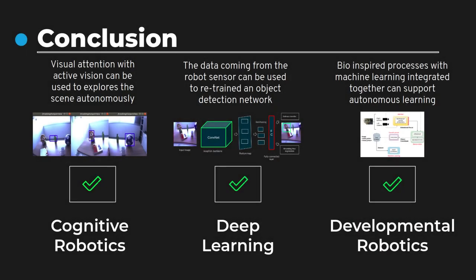To conclude, in this work we proposed an architecture that allows the iCub robot to autonomously explore a scene and learn to detect objects. We integrated visual attention and active vision and showed that it can successfully guide the robot's learning by identifying all the salient regions — in our case, all the different objects — and collect a suitable dataset that can be used in a transfer learning approach to retrain a deep object localization network.